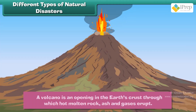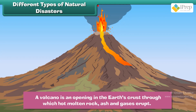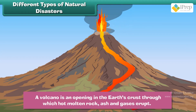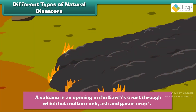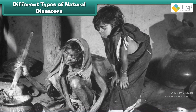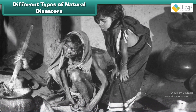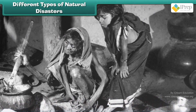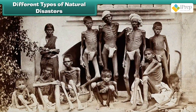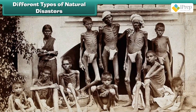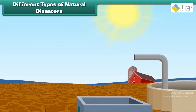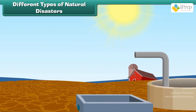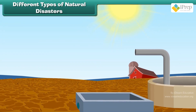A volcano is an opening in the earth's crust through which hot molten rock, ash, and gases erupt. A famine is a situation in which there is not enough food for a great number of people, causing illness and death. Drought is a long period when there is little or no rain on a piece of land.